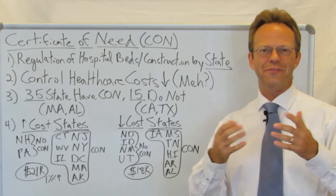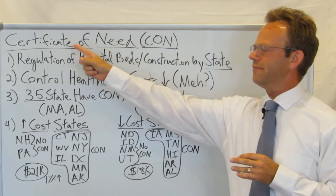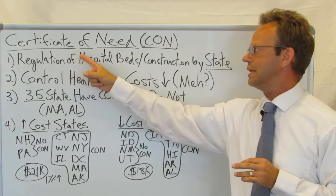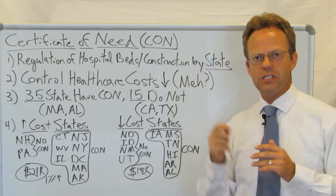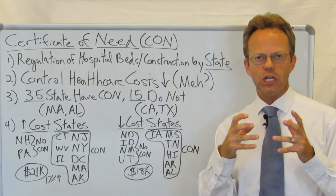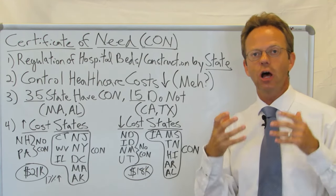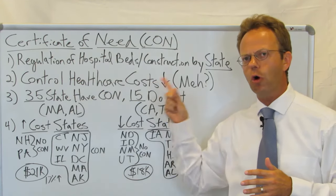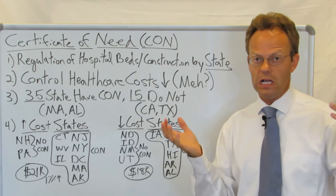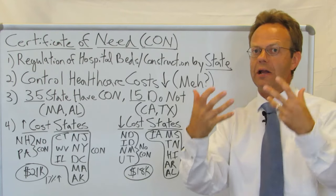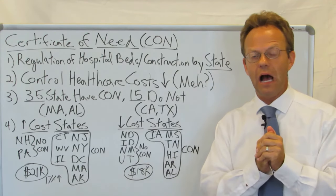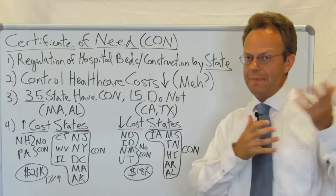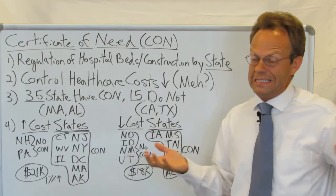Hello, this is Dr. Eric Bricker, and thank you for watching A Healthcare Z. Today we're going to be discussing certificate of need, or CON — where there is state regulation of hospital beds and hospital construction. Certificate of need was created about 40 years ago in an attempt to control healthcare costs: the idea was that more hospital beds and hospitals would induce supplier-induced demand of healthcare services, raising costs. But looking at the research, at the end of the day, it's kind of mixed — maybe it did, maybe it didn't; maybe certificate of need actually even increased the cost of healthcare. It's really not clear.